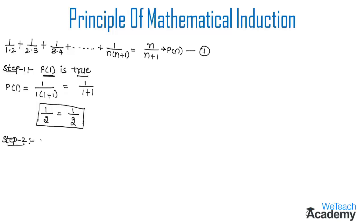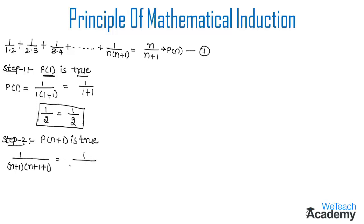Step 2: We now need to prove P(n+1) is true. Substituting n = n+1 into the nth term 1/(n(n+1)), we get 1/((n+1)(n+1+1)), which simplifies to 1/((n+1)(n+2)). This will be the next term of the series.